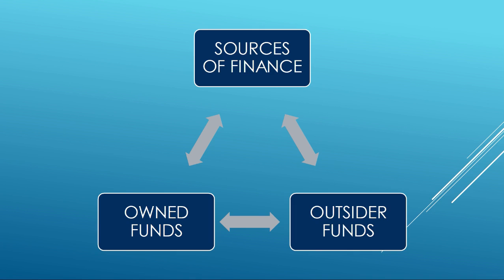Next, we have to identify the sources of finance which can be funded and will give minimum cost to get maximum profit. Sources of finance can be tapped in two ways: one is owned funds and another one is outsider funds. Owned funds means owner's capital — the amount invested from the owner's pocket. It is permanent capital till the company ends. Outsider funds are the amounts invested from outsiders, either through shares, debentures, or any loan borrowed from a financial institution.